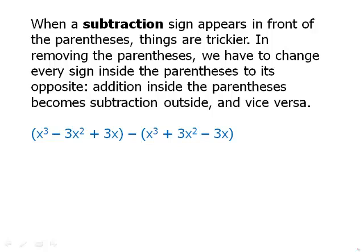So the first parentheses, we can just remove without any problem. But the second parentheses, when we remove those, the addition of 3x squared inside the parentheses becomes subtraction outside. And the subtraction, the subtraction of 3x becomes addition outside. Those two change to its opposite. And once we have that, then we can simplify and it simplifies to this.